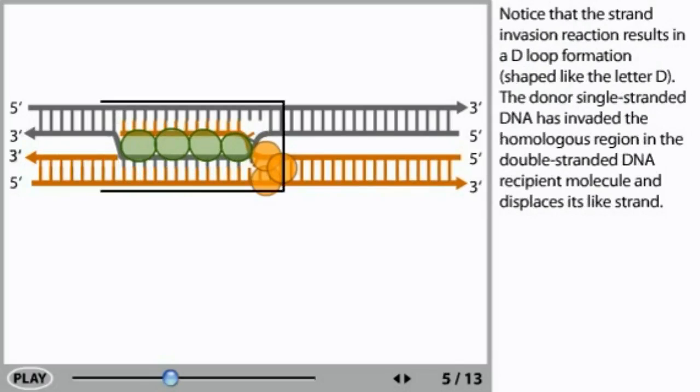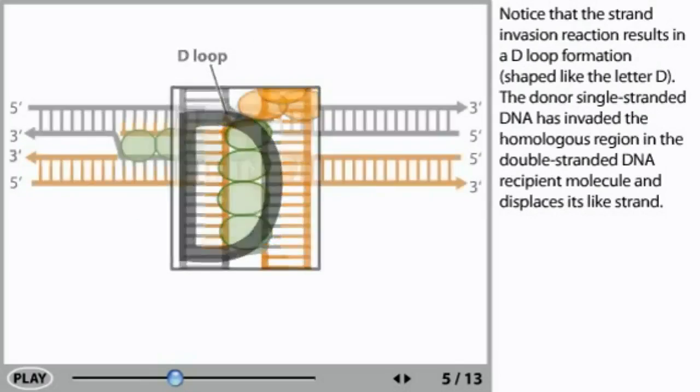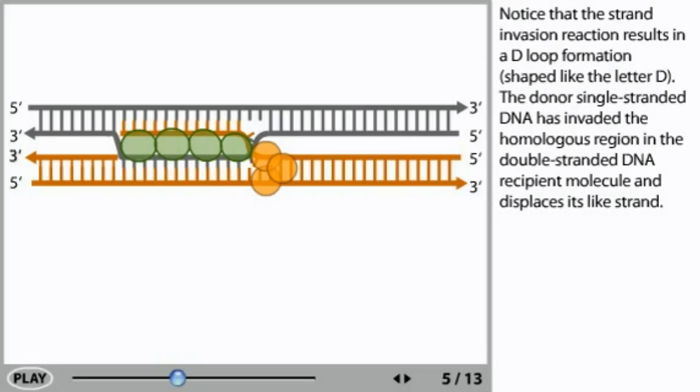Notice that the strand invasion reaction results in a D-loop formation shaped like the letter D. The donor single-stranded DNA has invaded the homologous region in the double-stranded DNA recipient molecule and displaces its like strand.